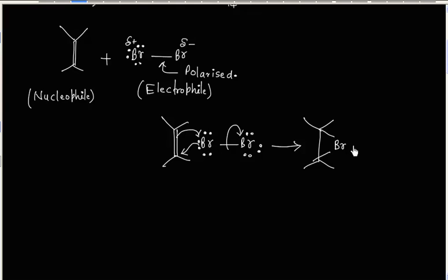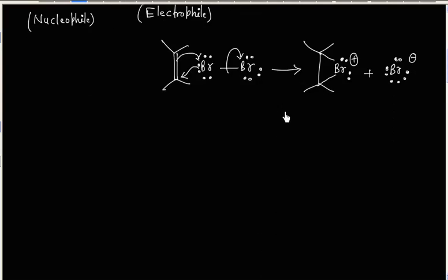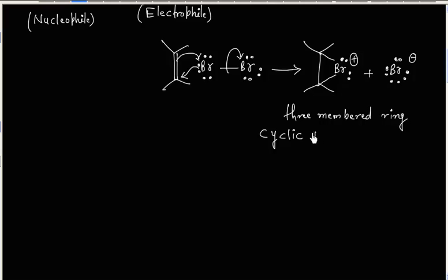This generates a cyclic intermediate. Bromine will have two lone pairs of electrons, and bromine will also have a positive formal charge. This cyclic intermediate is called bromonium ion. It is a three-membered ring.